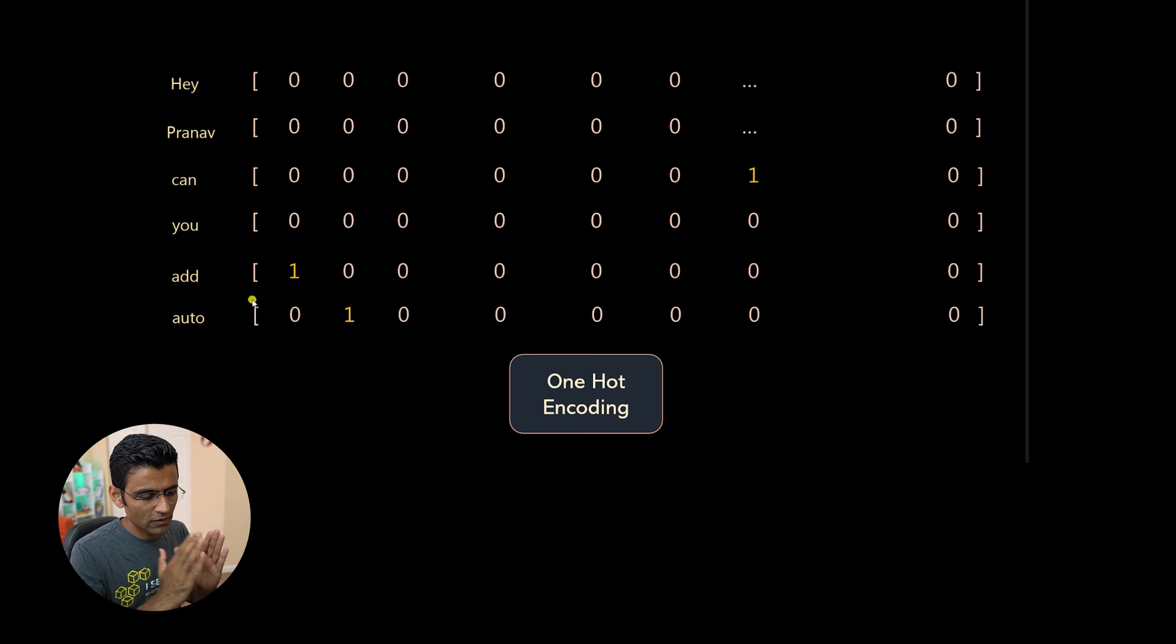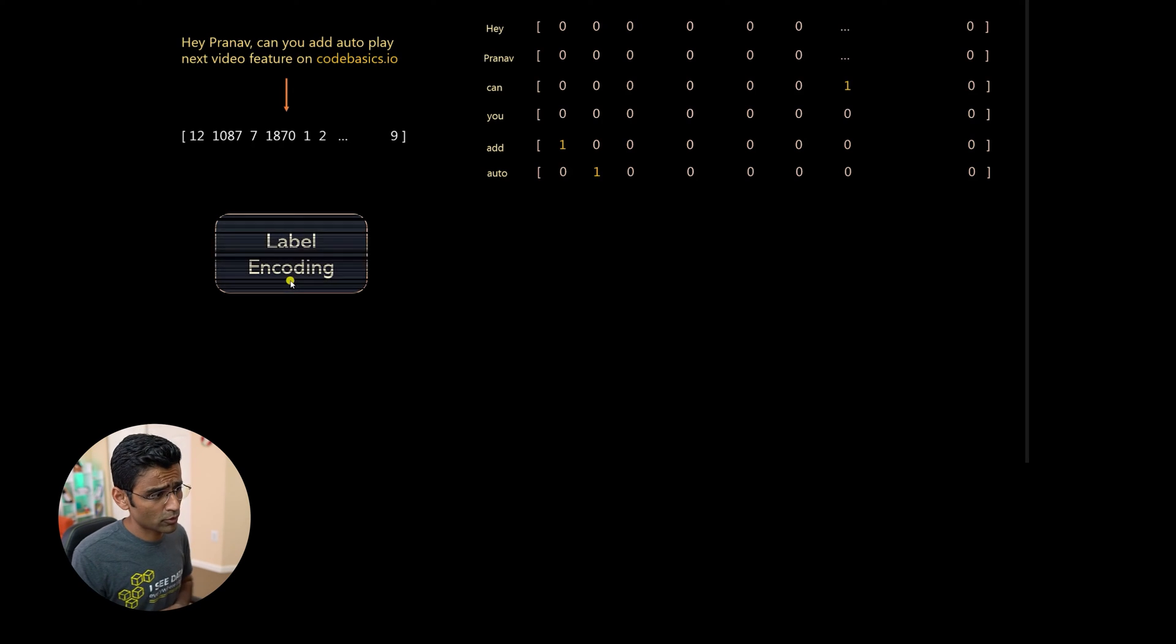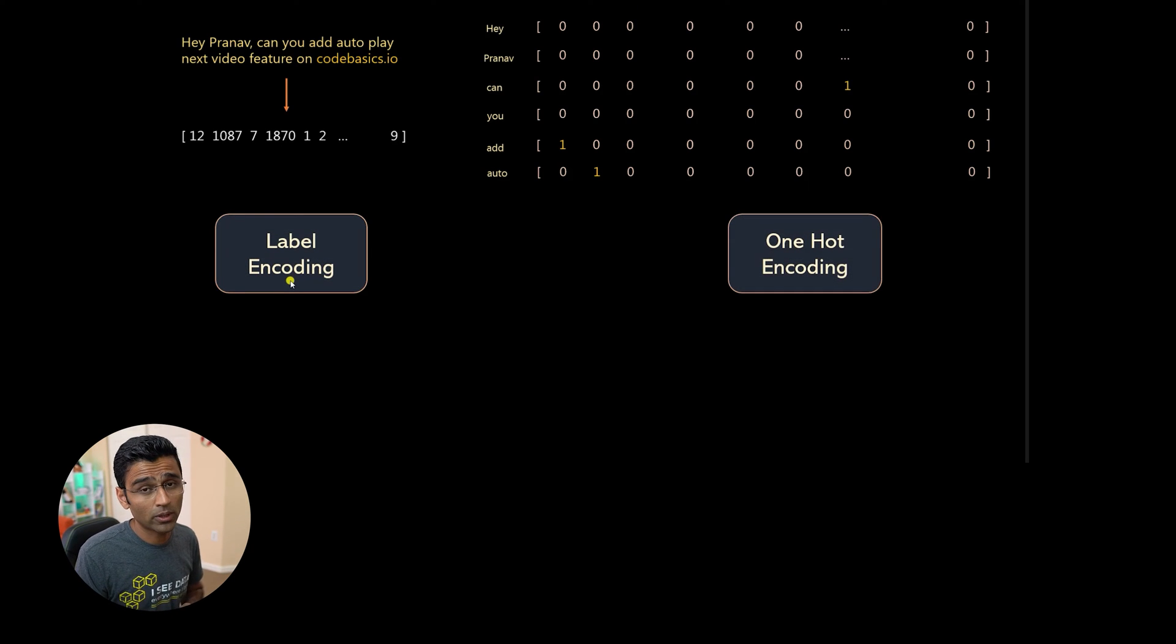You have your entire vocabulary and you assign an index in that list for each individual word. And wherever that word appears, you just put one at that position. Remaining positions are 0. So we looked into two approaches: label encoding and one hot encoding.